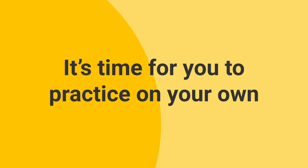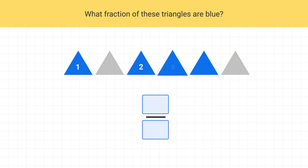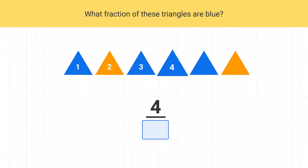Now it's time for you to practice on your own. What fraction of these triangles are blue? The numerator will be the number of blue triangles. We can count that there's one, two, three, four blue triangles, so our numerator is four. The denominator will be the total number of triangles. There's a total of one, two, three, four, five, six triangles, so the denominator of this fraction is six.